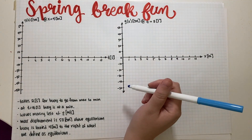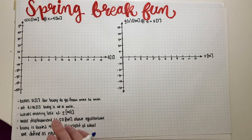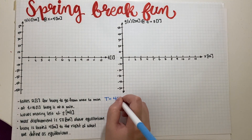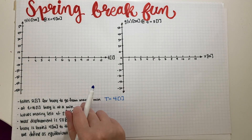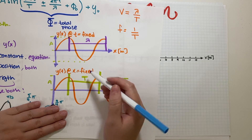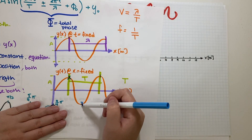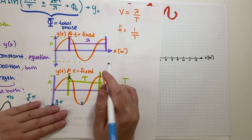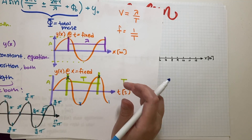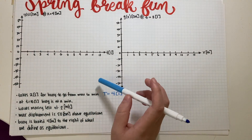The first information we're given is that it takes two seconds for the buoy to go from max to minimum. This means that the period is actually four seconds. Looking at the graph, one period is from max to max or min to min. So if it takes two seconds to go from max to min, it must take four seconds from max to max — double that amount.